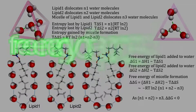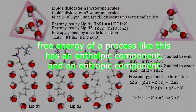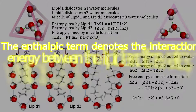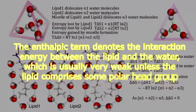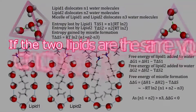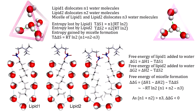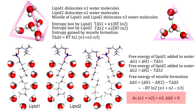If you remember your high school classes, the free energy of a process like this has an enthalpy component and an entropy component. The enthalpy term denotes the interaction energy between the lipid and the water, which is usually very weak unless the lipid comprises some polar head group. So if the two lipids are the same, the difference in the enthalpy component is 0. Therefore, the free energy difference of lipid 1 and 2 forming a micelle in water is given as −TΔΔs, which equals −(N1 + N2 − N3) × RT ln2. As you can see, ΔΔG is negative, so the process is thermodynamically favorable.